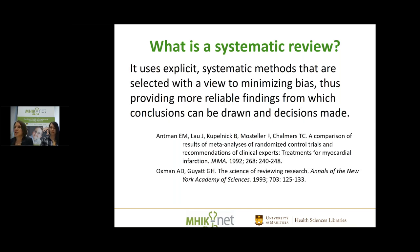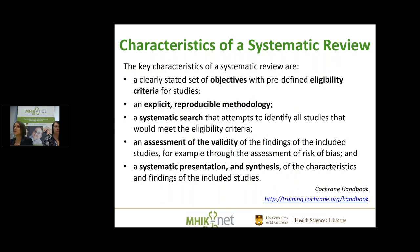This definition is from the Cochrane Handbook, based on evidence from the early 1990s. A systematic review is systematic in its methods — having systematic methods helps to minimize bias, and when you minimize bias, your findings are more reliable. The characteristics include a clearly stated set of objectives with predefined eligibility criteria, such as age group or drug dosage, set in advance so you can't slip in something that might change the results.